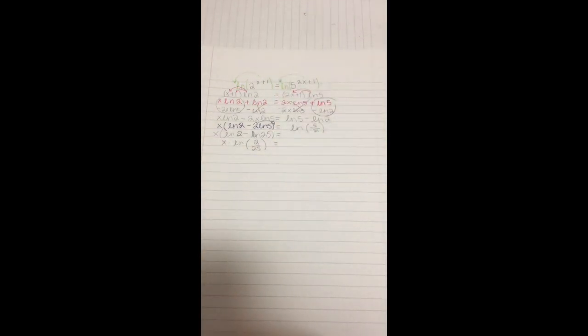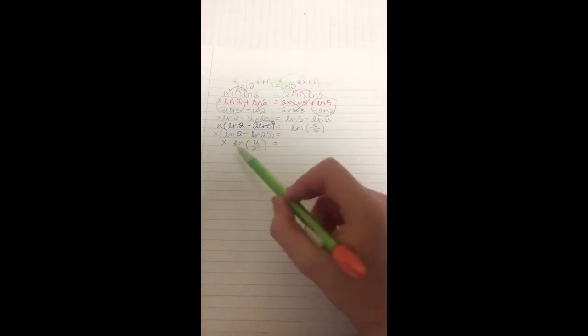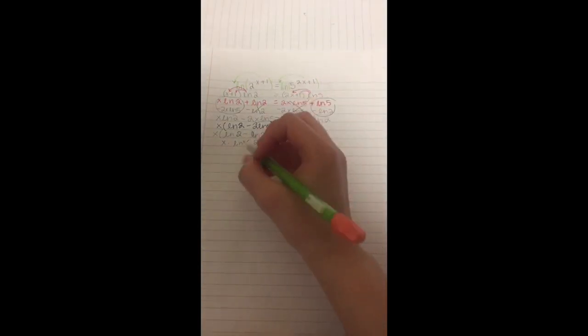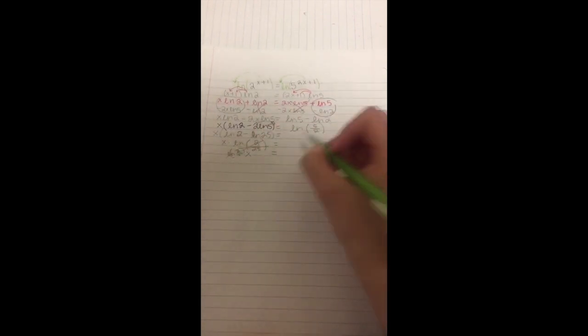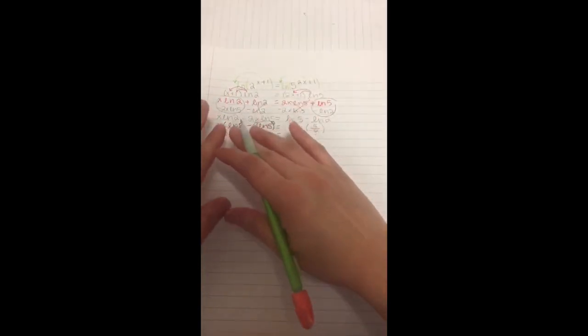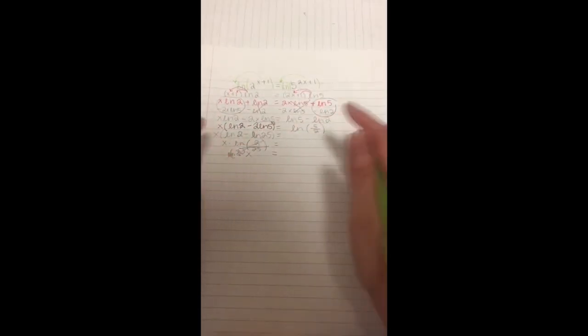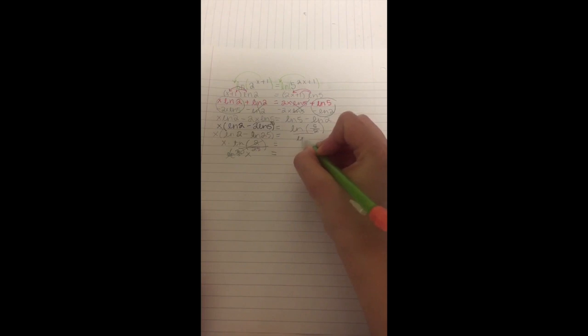So now our 7th step is to solve for x. So you would put that x right here equals. Now to get it alone, you would have to divide by ln of 2 over 25. So that can cancel out. And since you did it to this side, you have to do it to the other side. So it would be ln log of 2 and 25.